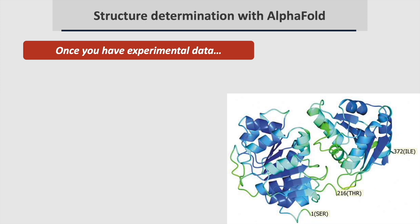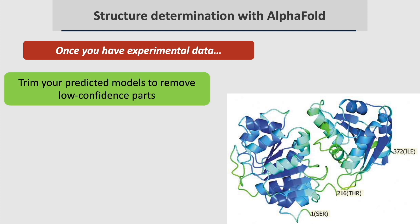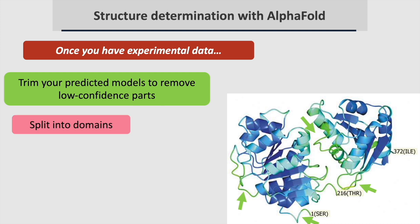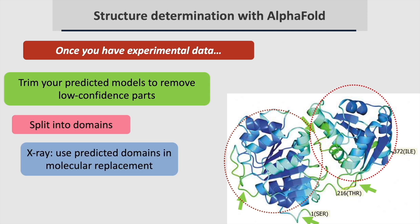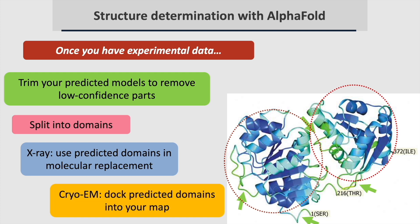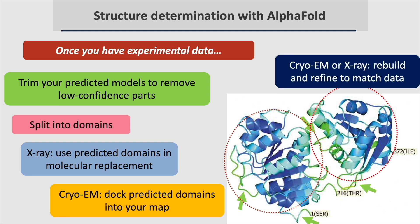When you have x-ray or cryo-EM data, you can use your AlphaFold models to jumpstart Structure Determination. You'll want to trim your predicted models to remove low confidence parts. You may want to split your models into domains, as domain relationships may be uncertain. Then you can use your predicted models as search models in molecular replacement if you have x-ray data, or you can dock your models into your cryo-EM maps. For either cryo-EM or x-ray data, you can rebuild or refine your docked models based on your experimental data.